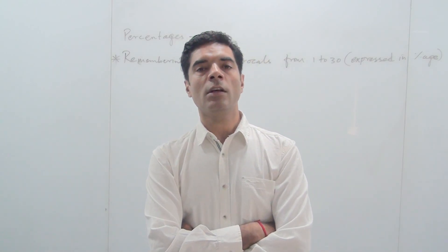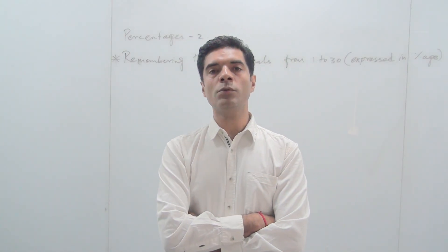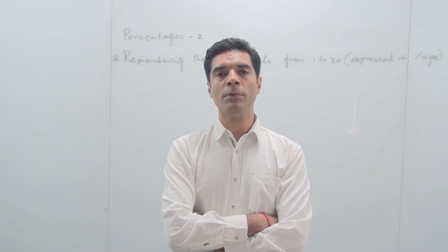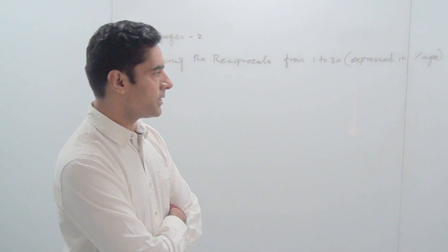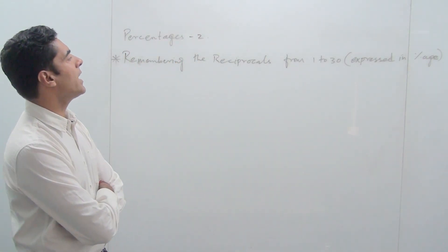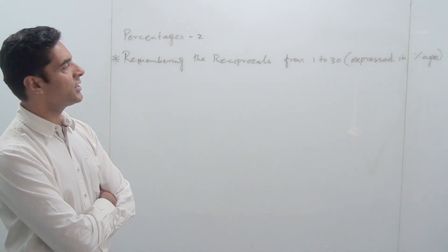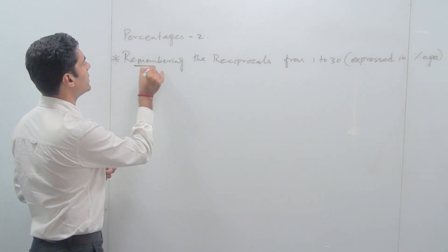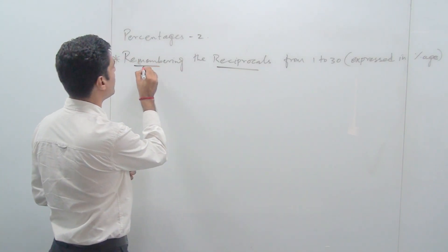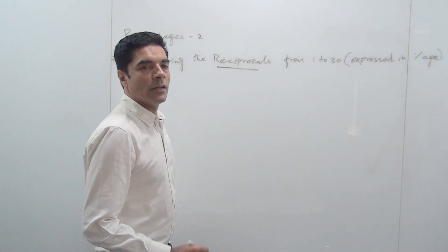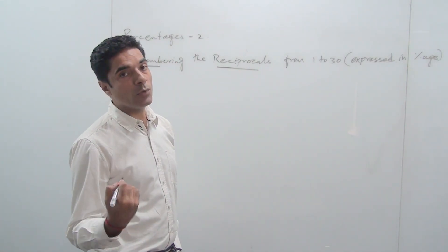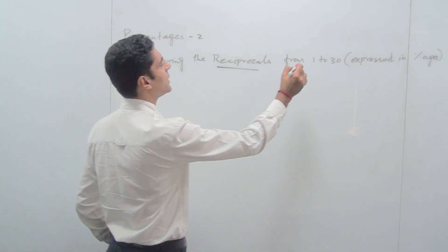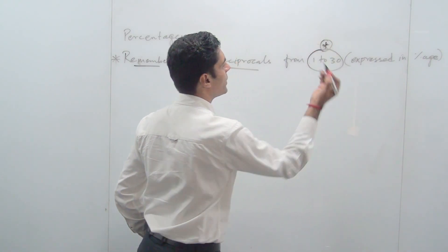Hello friends. In today's session I will give you tips on how to solve a question of quantitative aptitude with very less use of pen and paper at a faster pace. As I was telling you, if you are able to convert your percentages into fractions, a lot of time can be saved. That can only be done if you remember your reciprocals from 1 to 30 expressed in percentages — and it's very simple to remember. I can help you remember the reciprocals from 1 to 30 expressed in percentages, and that can be done within 2-3 minutes.